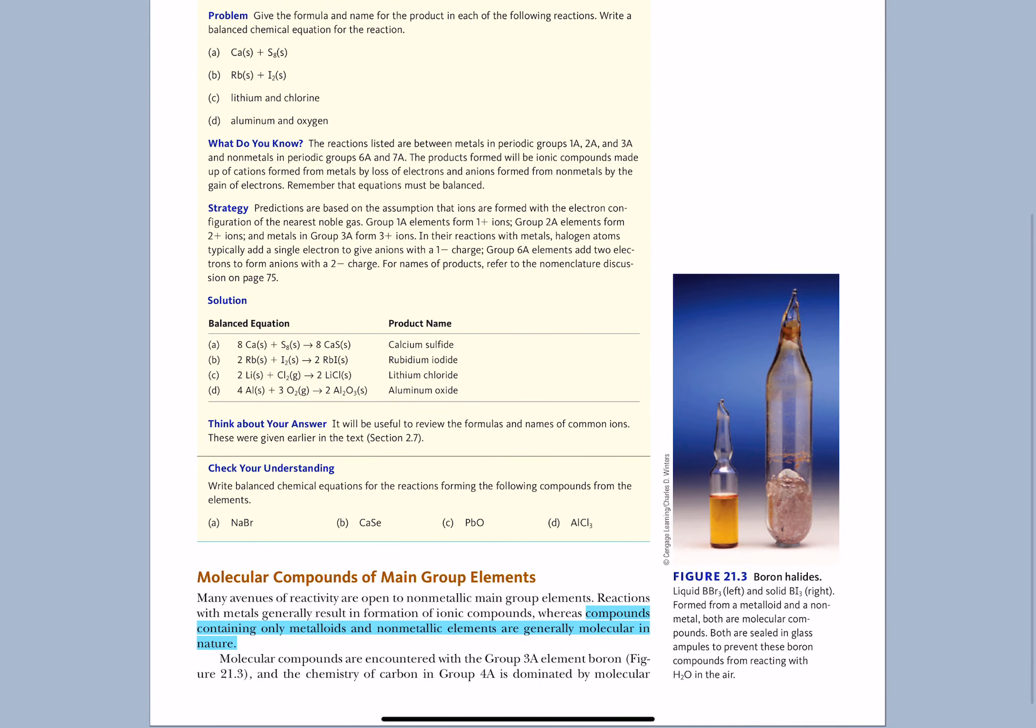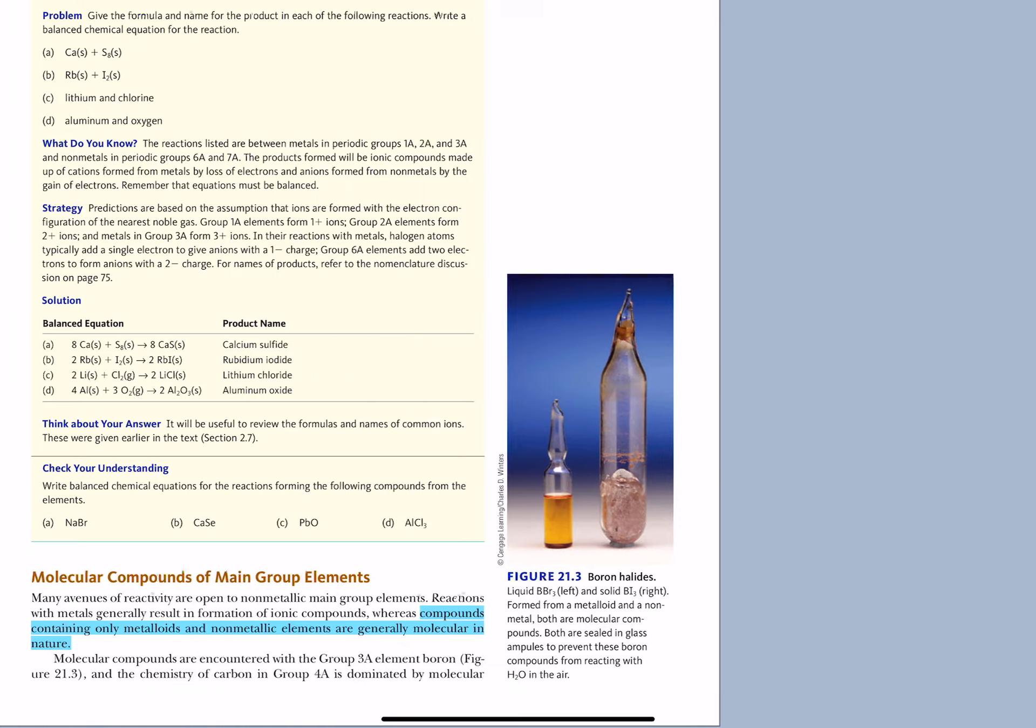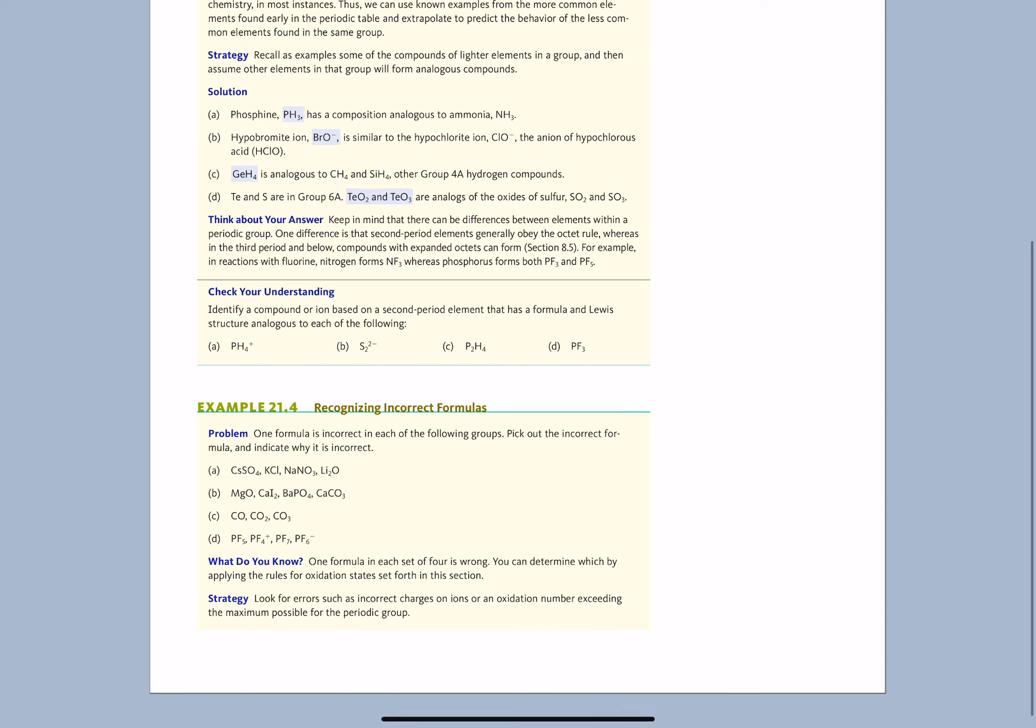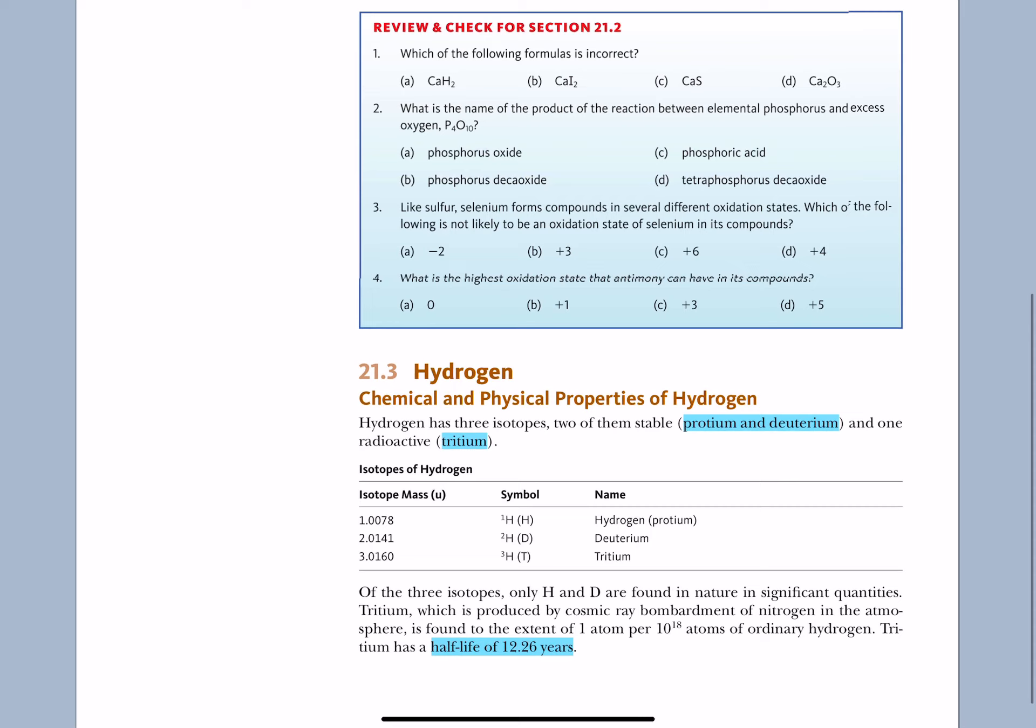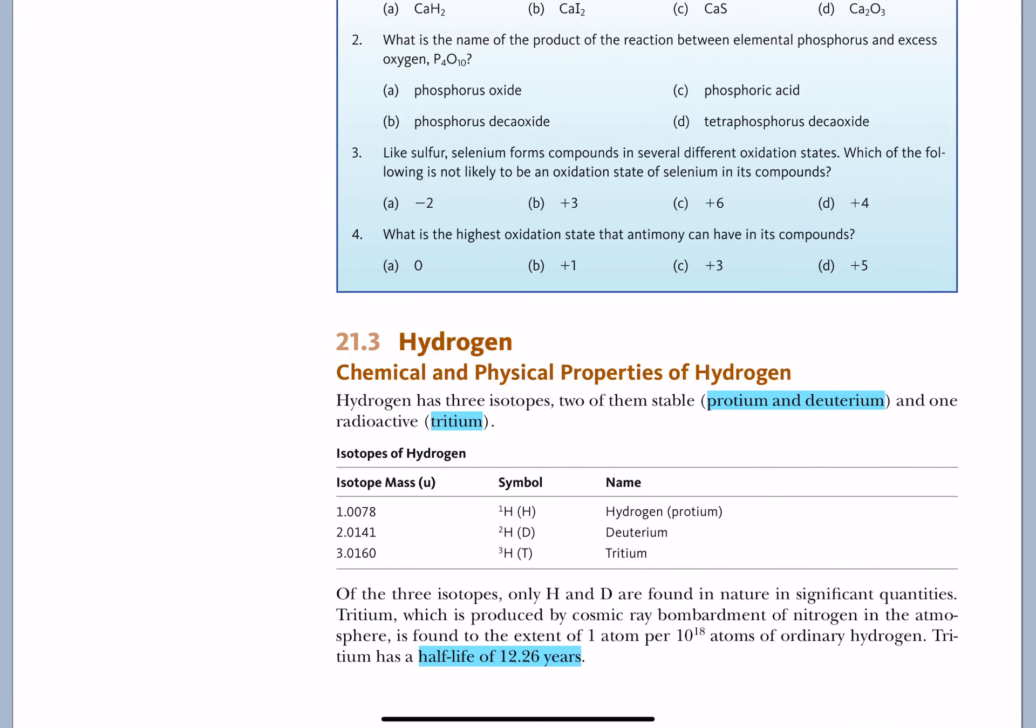And we learned how to write formulas for compounds based upon that. We also can create molecular compounds of these main group elements as well, especially from the right side of the periodic table. Now, let's look at the element number one, hydrogen.